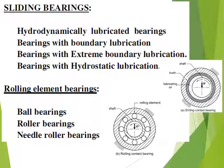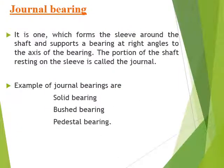The two major types of bearing are sliding and rolling. Under sliding we have hydrodynamically lubricated bearings, where a fluid film is maintained, as well as bearings with boundary lubrication, extreme boundary lubrication, and hydrostatic lubrication. Under rolling type we have ball bearings, roller bearings, and needle roller bearings.